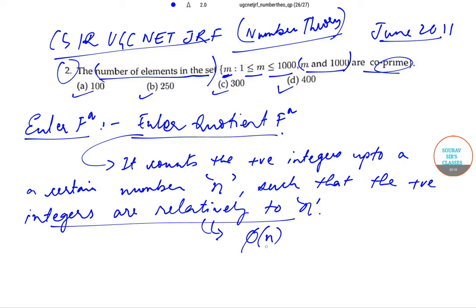This is what we have to find out, and it is denoted symbolically by phi of n. This is the Euler quotient function. Now if the number n equals p1^k1 × p2^k2 × p3^k3 and it will go until pt^kt, where p1, p2, p3 are all prime numbers and k1, k2 are their powers.